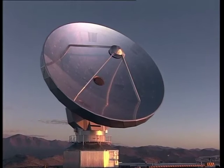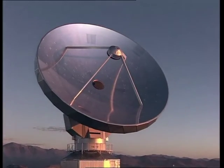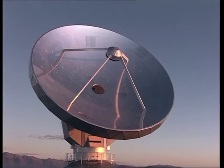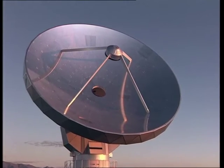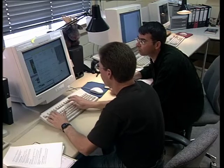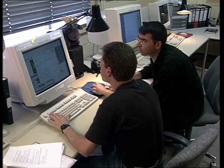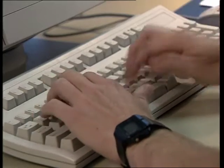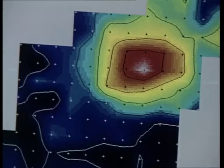The 15-meter Swedish ESO SEST telescope was for a long time the only antenna of its kind in the southern hemisphere. But now, astronomers are building the world's most powerful facility for millimeter astronomy, a giant array of antennas.